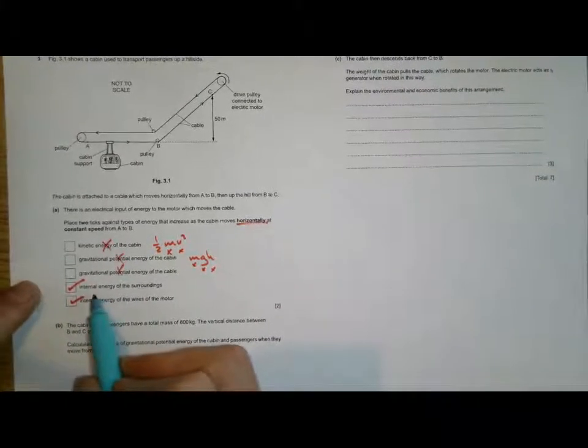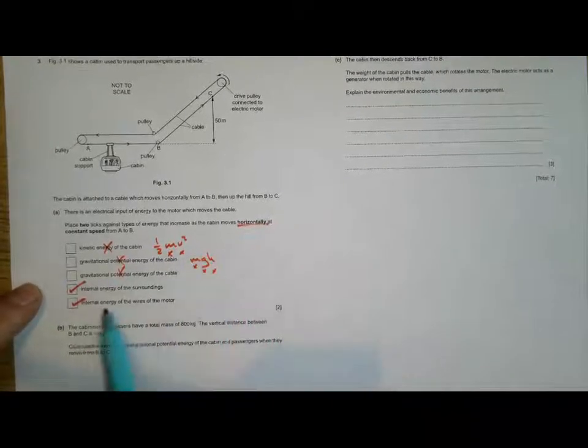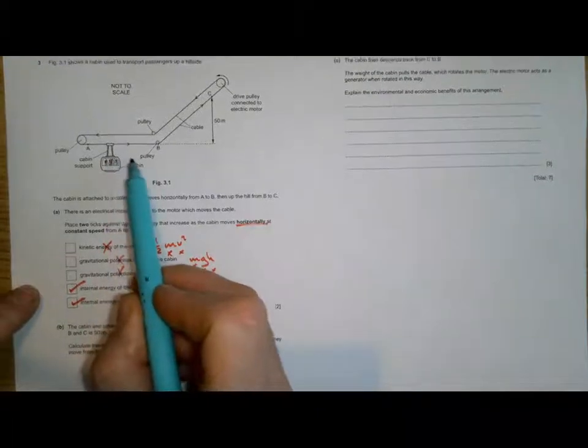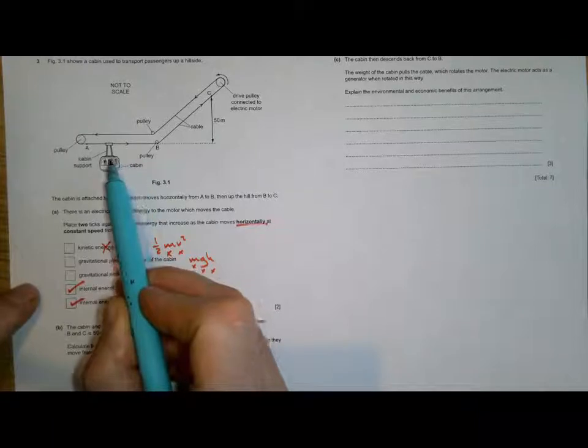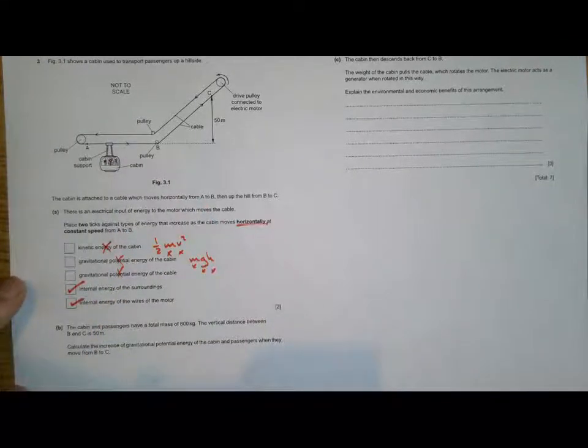What it means by internal energy in this case is basically the temperature of the wires and the motor and the temperature of the surroundings. This will be colliding with air particles and effectively transferring some of its energy to the air particles, thereby increasing their temperature.